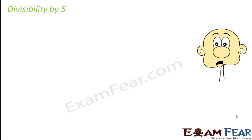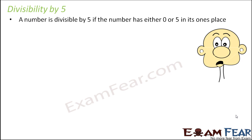So are you saying that the divisibility process is becoming simpler for every number? Now let's look at divisibility by 5. This is pretty simple. A number is divisible by 5 if the number has 0 or 5 in its ones place.